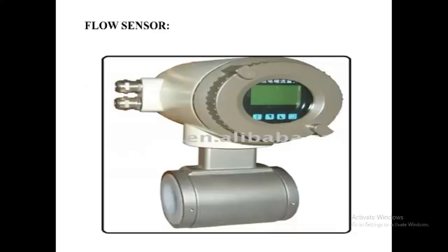Here the diagram represents the flow sensor. A flow sensor is a device for sensing the rate of fluid flow. Typically, a flow sensor is the sensing element used in a flow meter or flow logger to record the flow of fluid. As is true for all sensors, absolute accuracy of the measurement requires proper calibration.